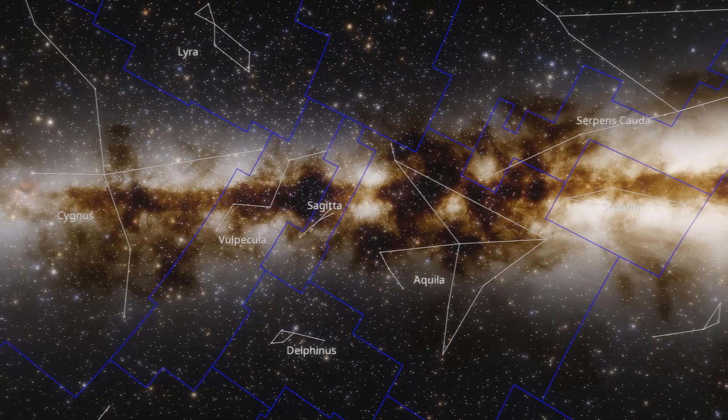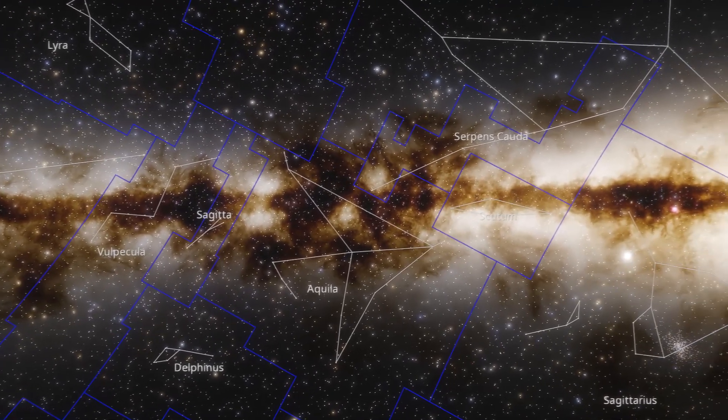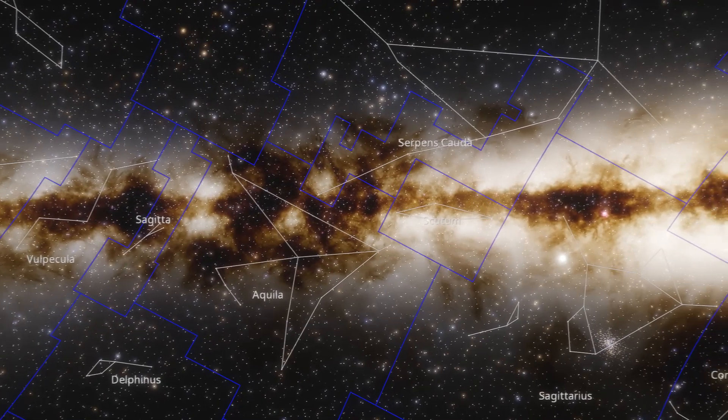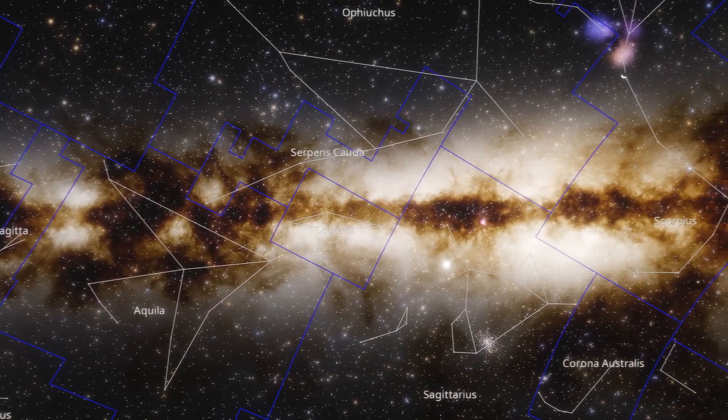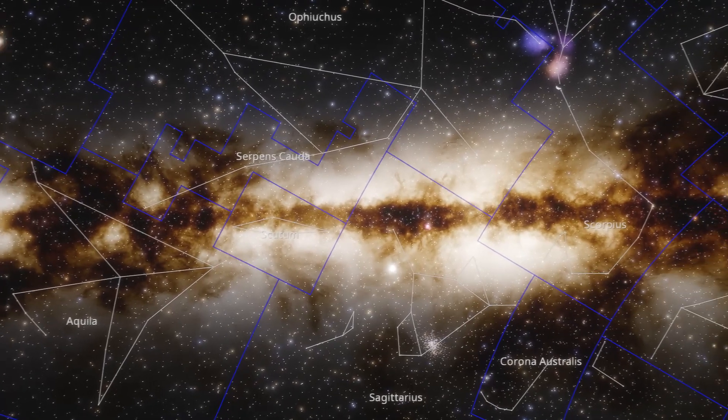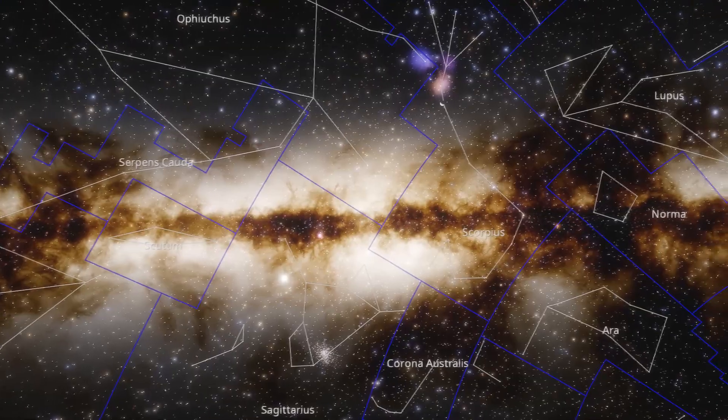Many coal sack-like clouds form a broad, dark bend along the Milky Way's midline, starting from the constellation Cygnus and extending through the constellations Aquila, Serpens, Sagittarius and Scorpius. This is the famous fork in the Milky Way.